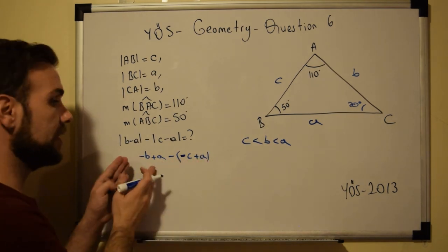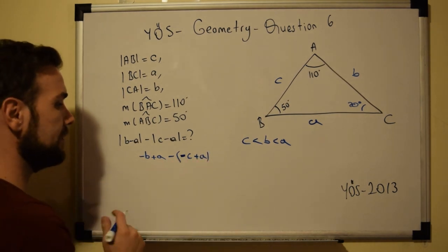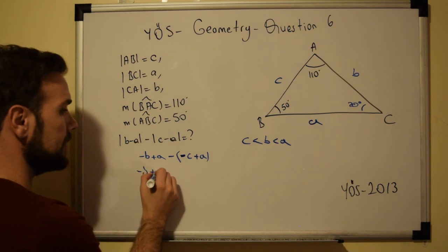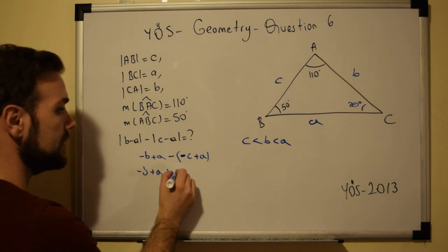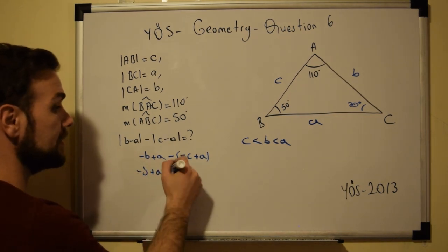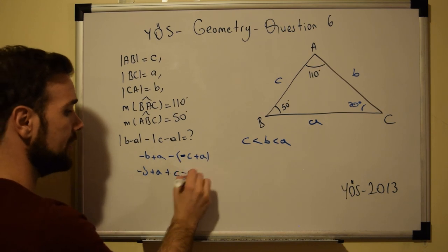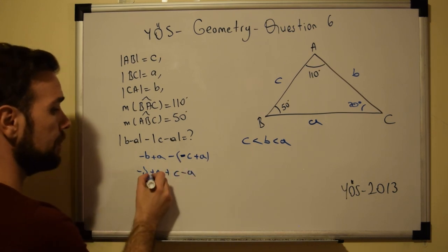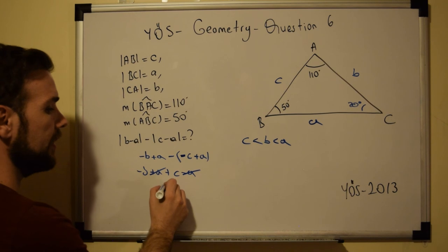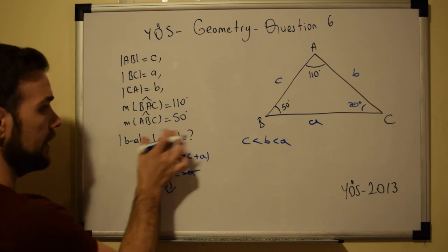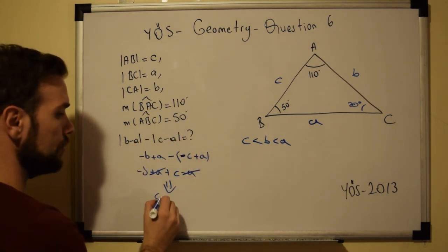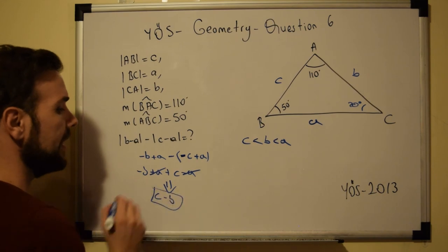So we now have (-b + a) - (-c + a). Expanding: minus b plus a plus c minus a. The +a and -a cancel each other, leaving the final answer: c - b.